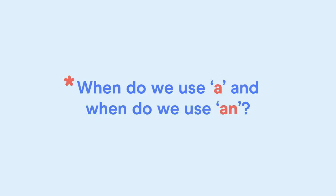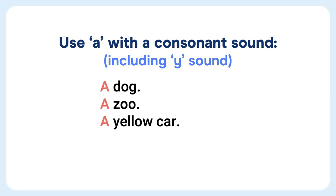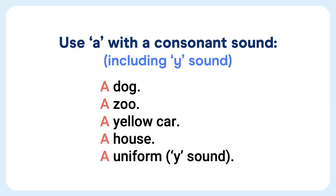When do we use 'a,' and when do we use 'an?' We use 'a' with a consonant sound, including the Y sound. For example: a dog, a zoo, a yellow car, a house, and a uniform.